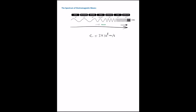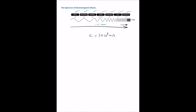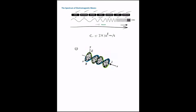Different types of electromagnetic waves include radio waves, microwaves, infrared, visible, ultraviolet, x-ray, and gamma ray. In general, the speed of a wave is related to its frequency and wavelength through this relation, and in vacuum, V is equal to C.